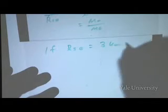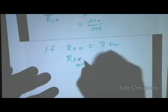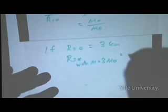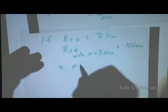So, if the Schwarzschild radius of the Sun is equal to 3 kilometers, as we calculated, the Schwarzschild radius of a star whose mass happens to equal three times the mass of the Sun is going to be 3 times that, or 9 kilometers. And that's equal to the radius of a neutron star.